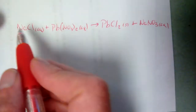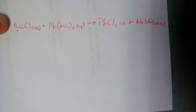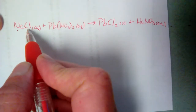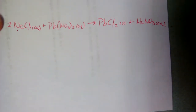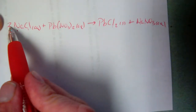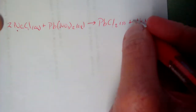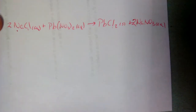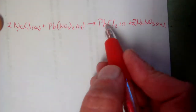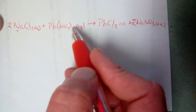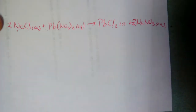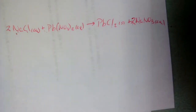Balancing visually: one sodium on the left, one on the right — good. One chlorine on the reactant side, two on the product side — out of balance, so put a 2 in front of NaCl. Now two chlorines on each side. Going back: 2×1 = two sodiums on the left, only one on the right, so add a 2 in front of sodium nitrate. Checking all atoms: two sodiums, two sodiums; two chlorines, two chlorines; one lead, one lead; two nitrates, two nitrates. Now it's balanced.